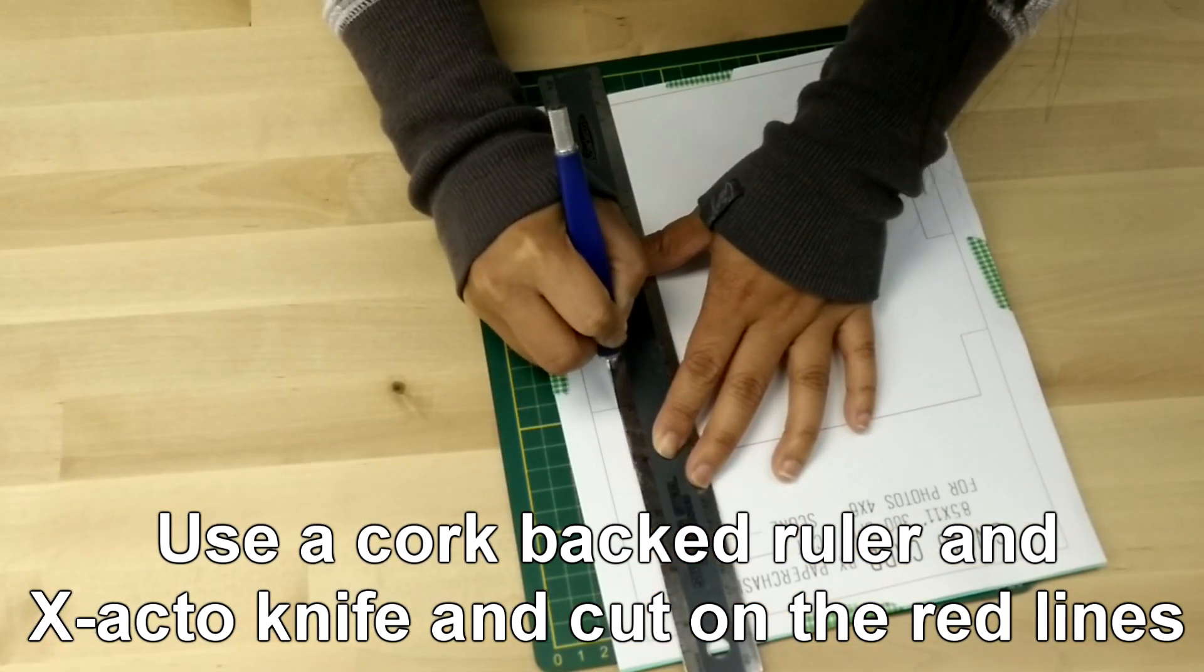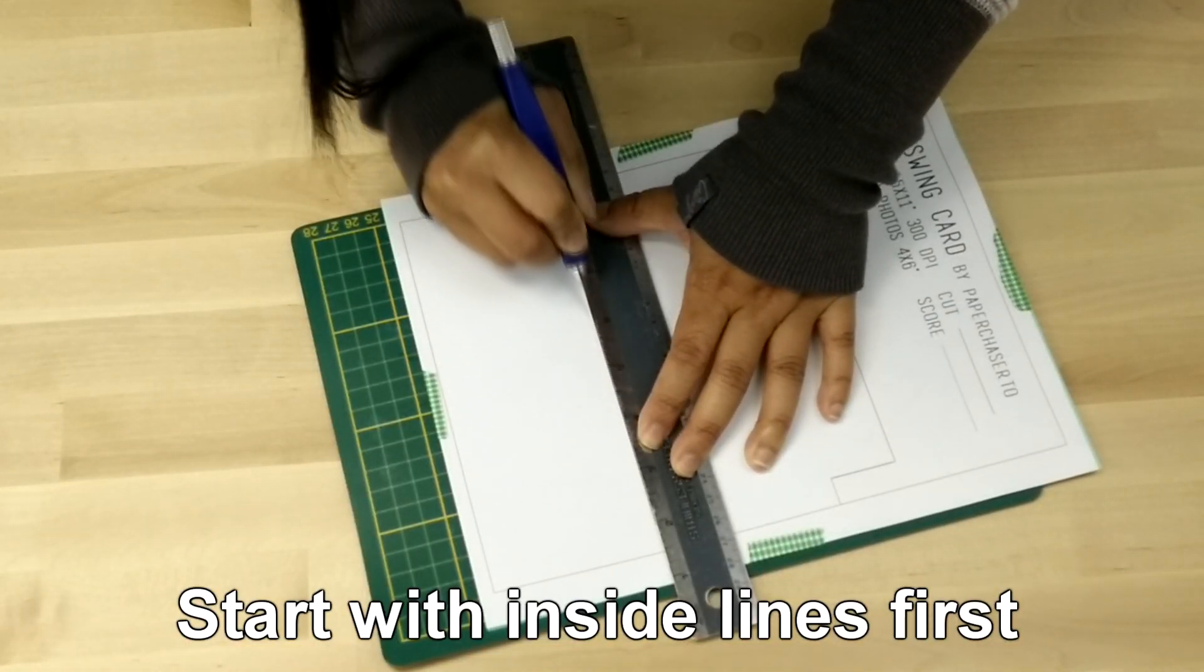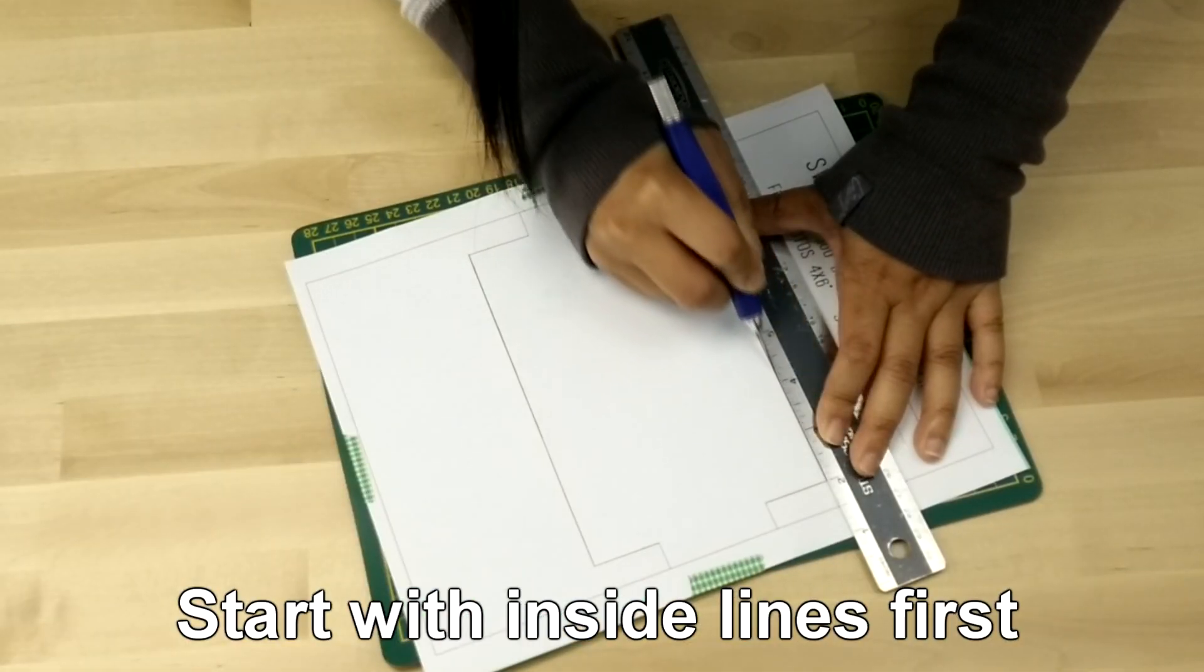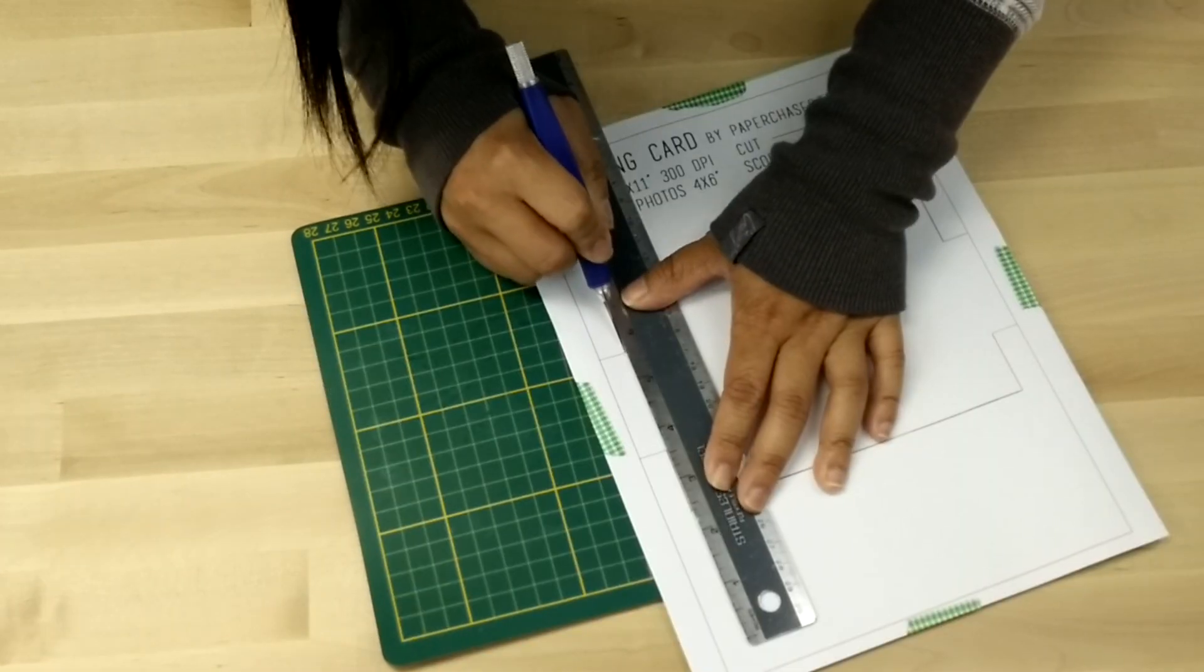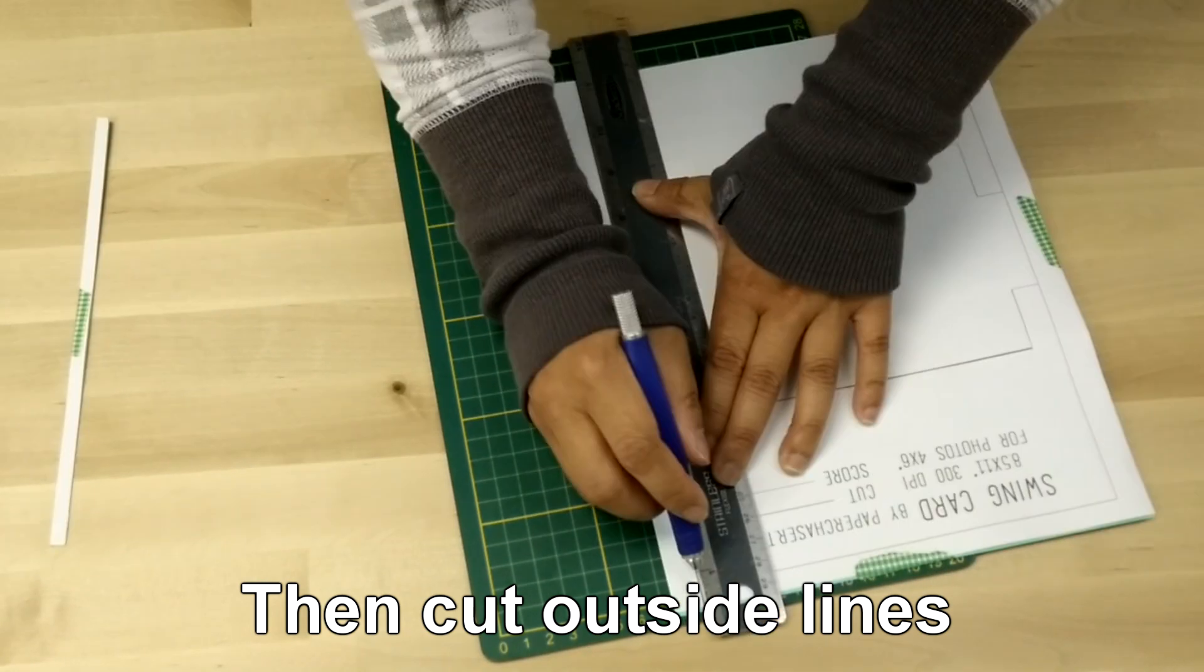I'm going to tape the template down and I'm going to start cutting with my cork backed ruler and my Exacto knife on the inside red lines. Once you have your inside lines cut, cut the outside red lines.